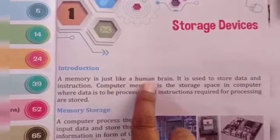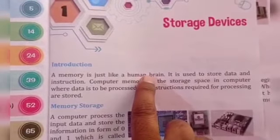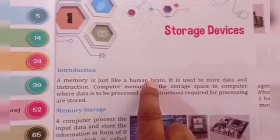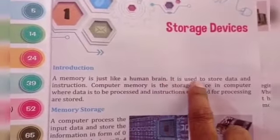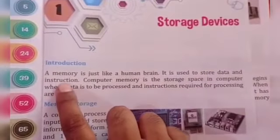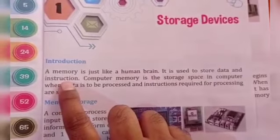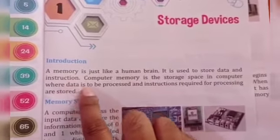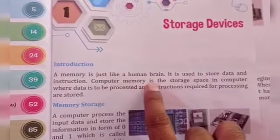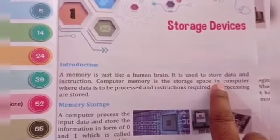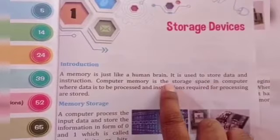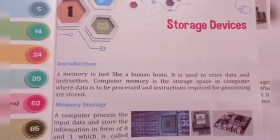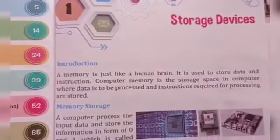A memory is just like a human brain. Memory क्या है — एक human का brain है, यानि एक आदमी का दिमाग है। It is used to store data and instructions. इसको हम data store और instructions को store करने के लिए use करते हैं।